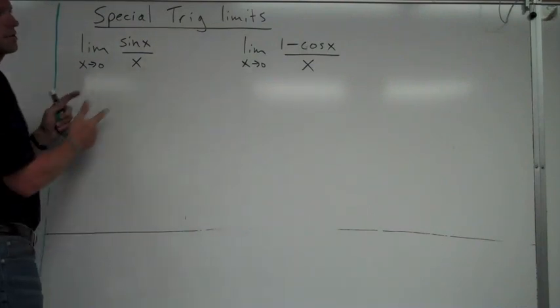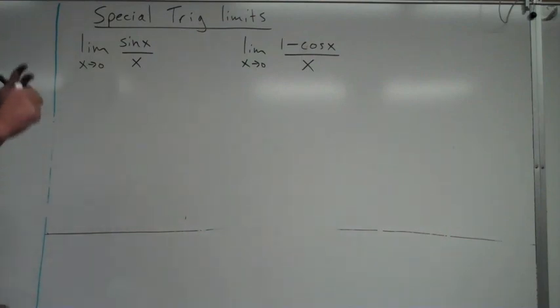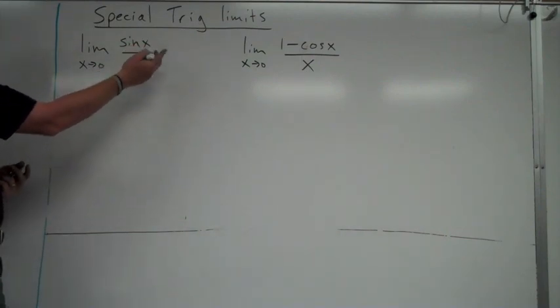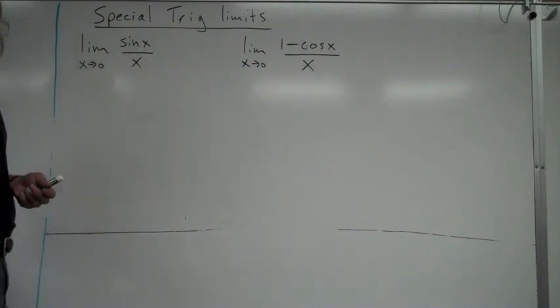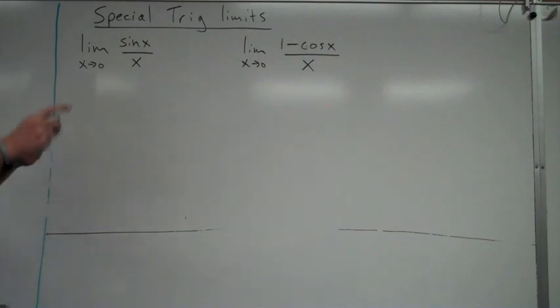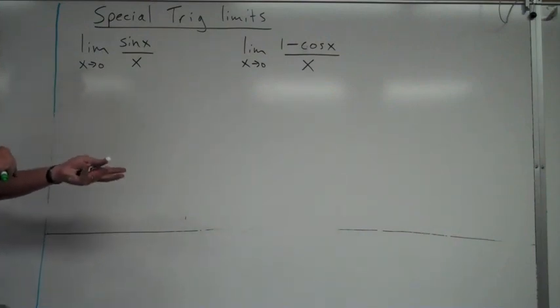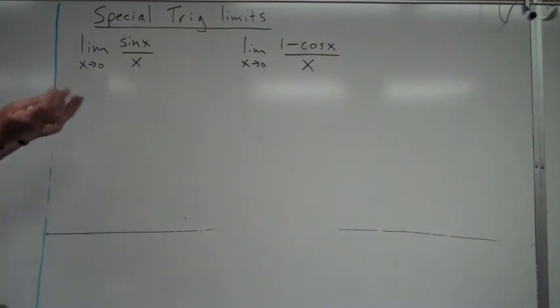If you look at this limit right here and you're thinking to try and evaluate it, I always recommend the first thing, always plug in. So I plug in zero and I get sine of zero, zero, so I get zero over zero. That tells me something. You know, in most cases, other than that absolute value of x over x case or something similar to that, you can manipulate to get a limit, or at least you can get a limit from it.